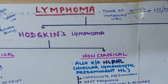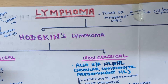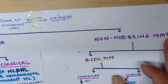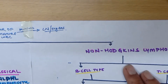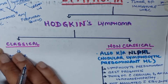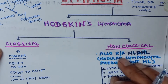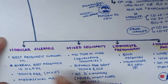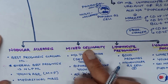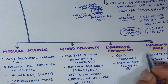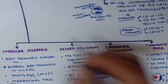Lymphoma is classified into Hodgkin's lymphoma and non-Hodgkin's lymphoma. Hodgkin's lymphoma is further classified into classical Hodgkin's lymphoma and non-classical Hodgkin's lymphoma. Classical Hodgkin's lymphoma is then further classified into nodular sclerosis, mixed cellularity, lymphocyte predominant, and lymphocyte poor — these are the four subtypes.